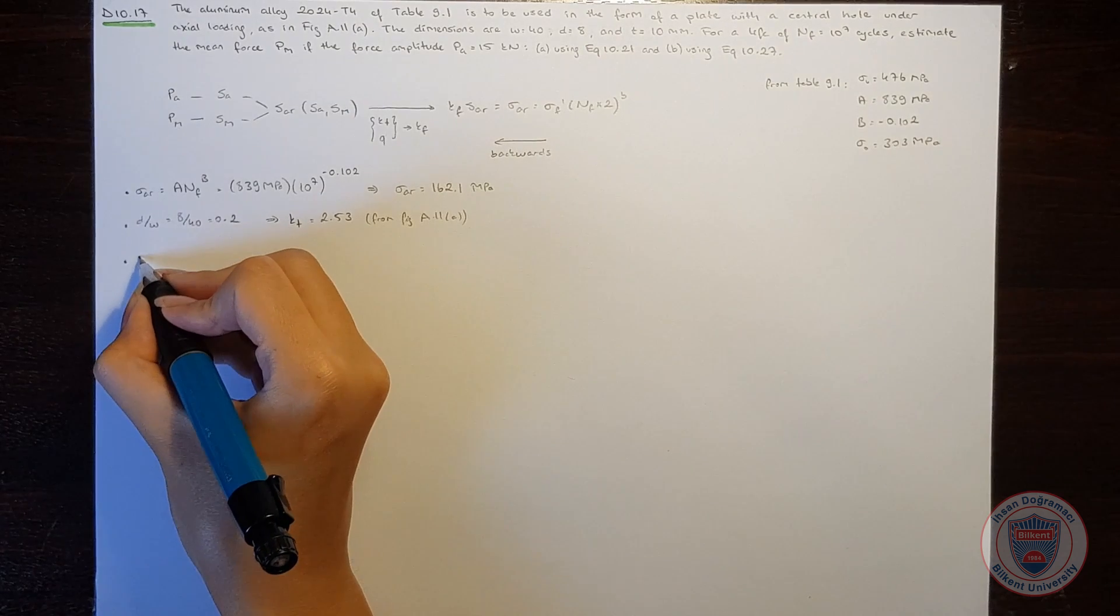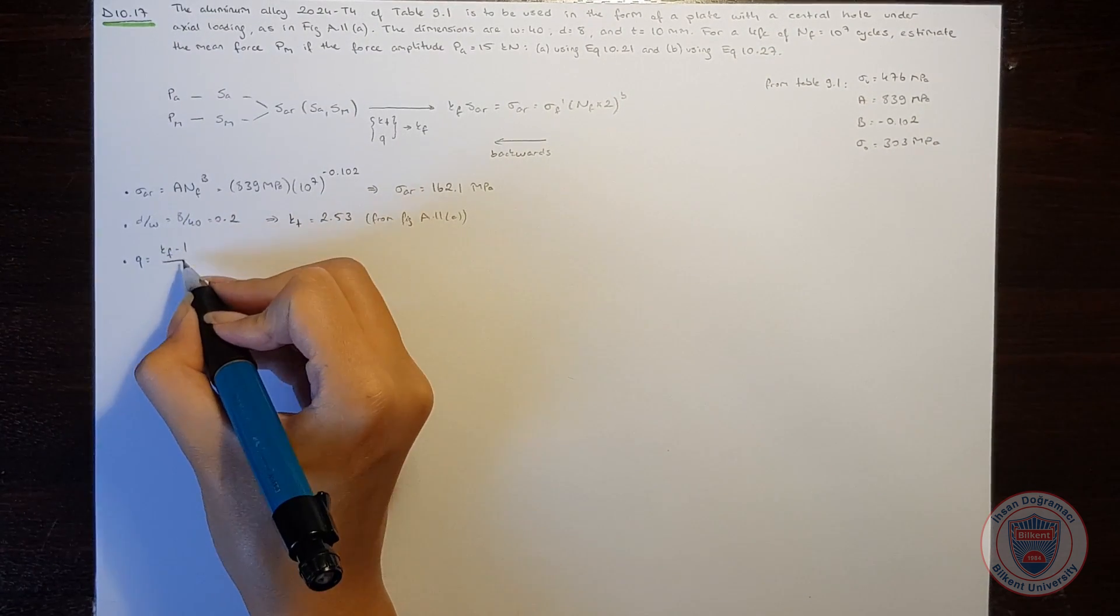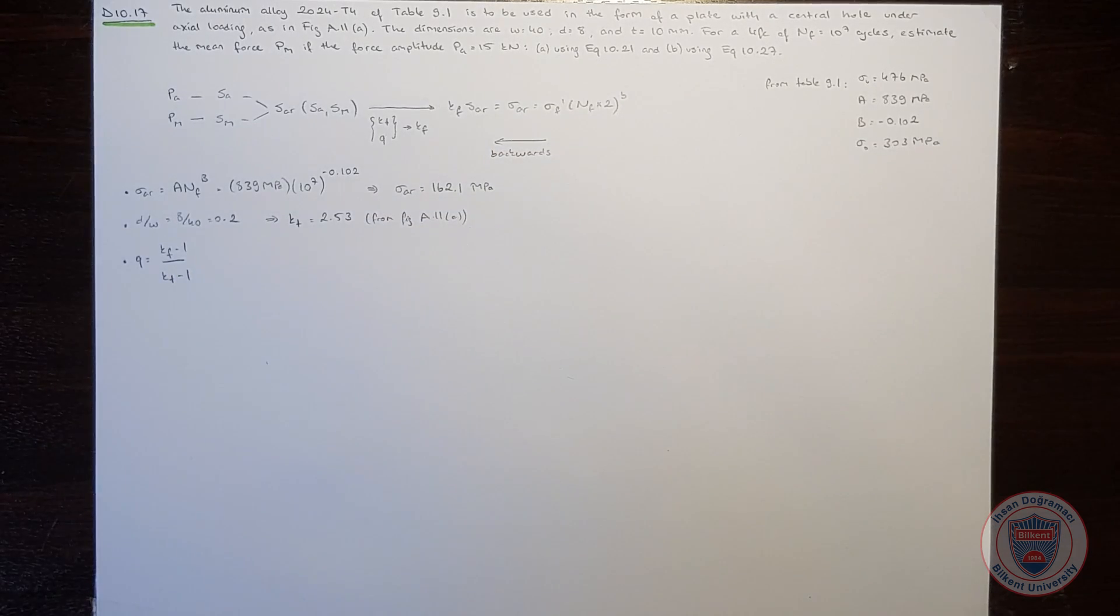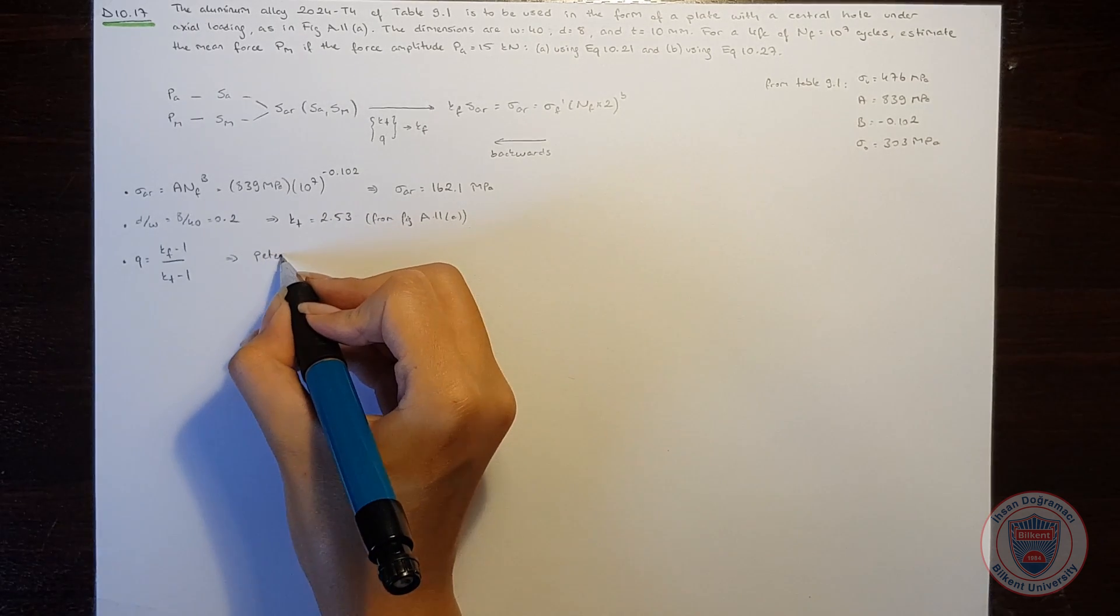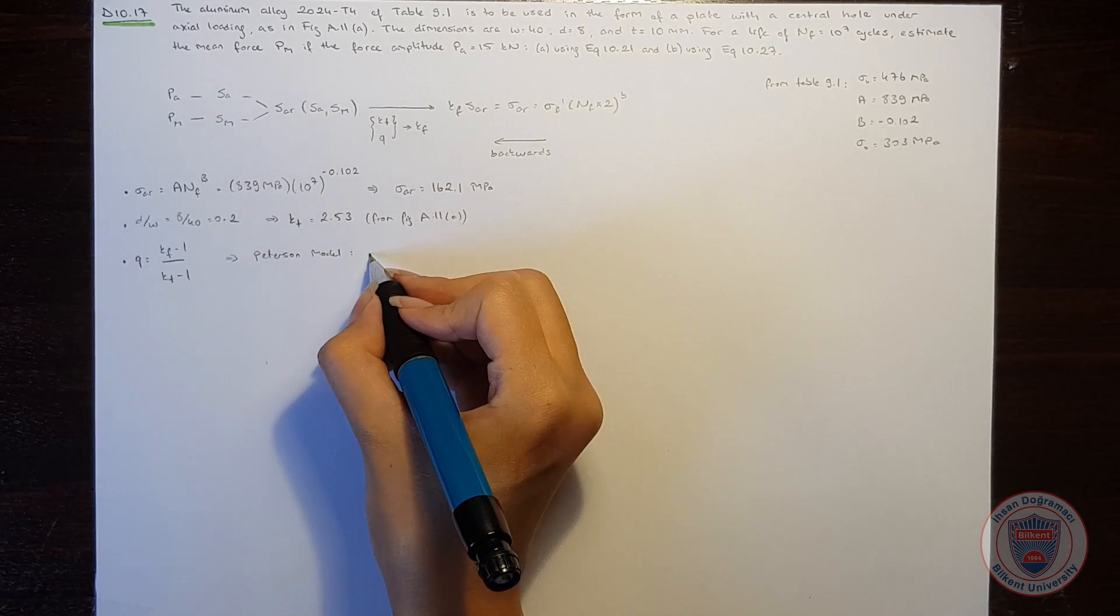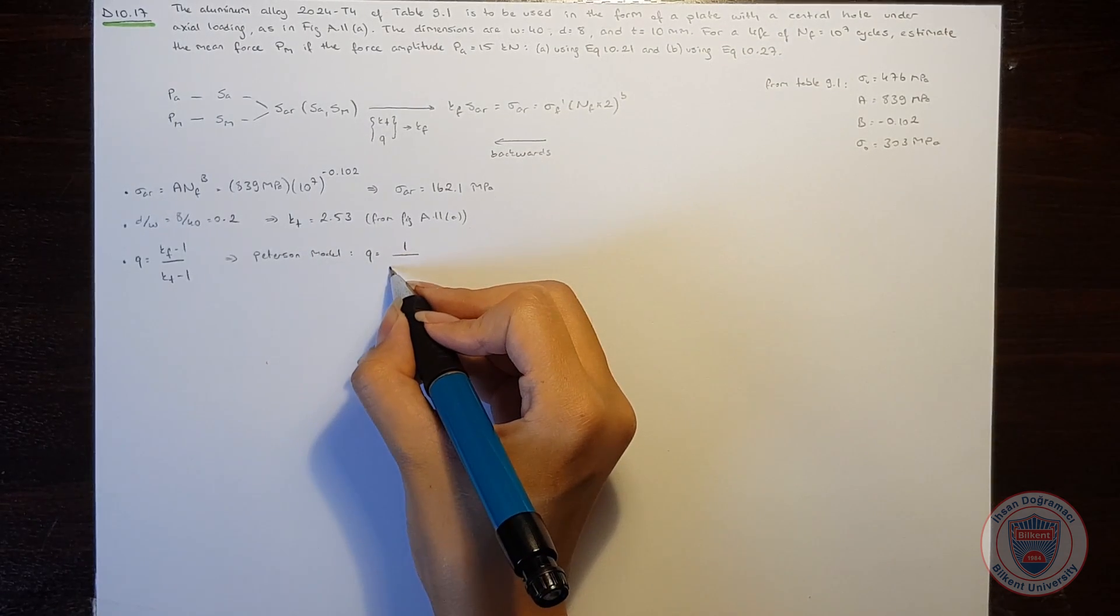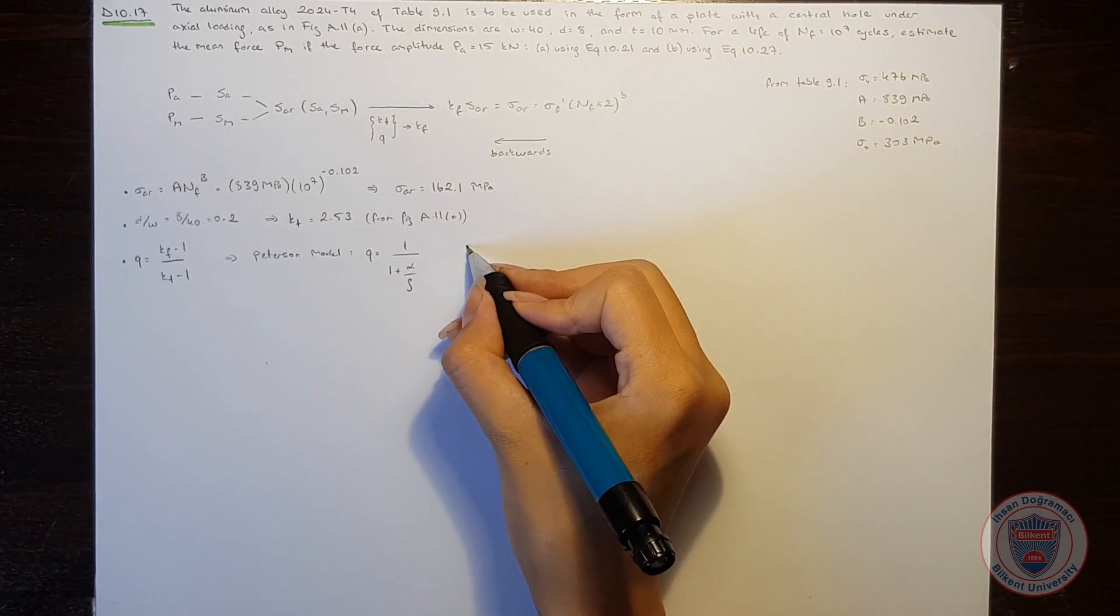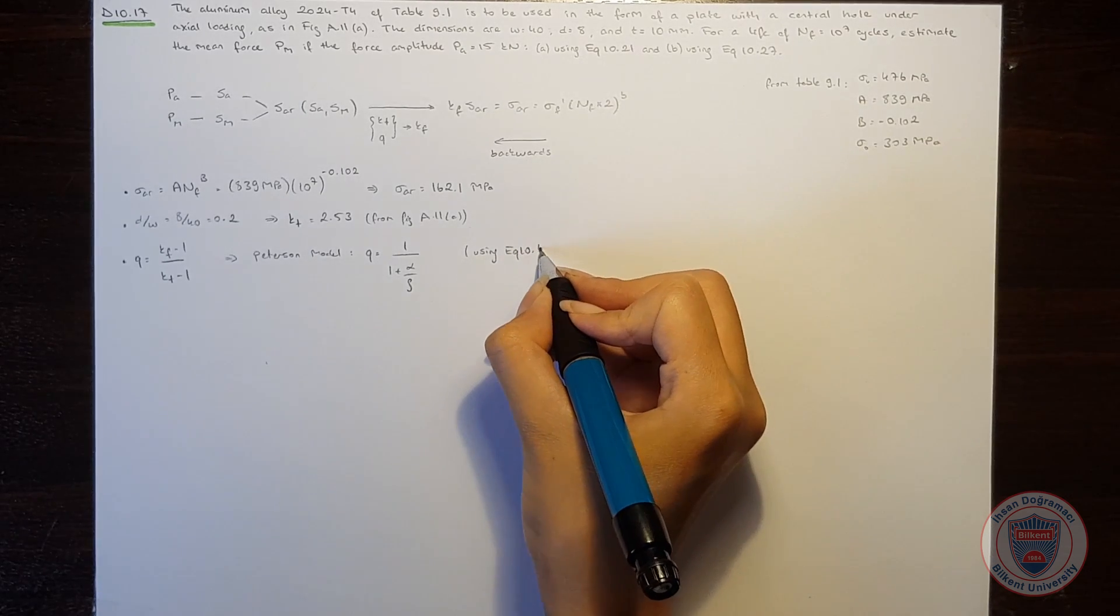And we know that the notch sensitivity is equal to the fatigue notch factor minus 1 over the stress concentration factor minus 1. Using Peterson model, we will see that the notch sensitivity is equal to 1 over 1 plus alpha over the notch radius using equation 10.6.